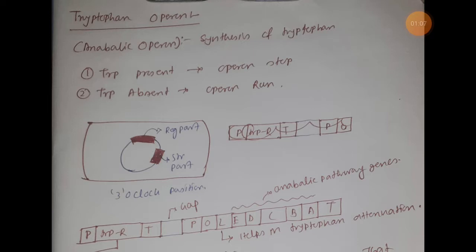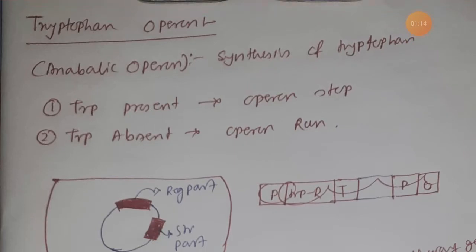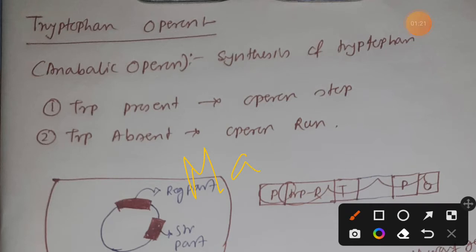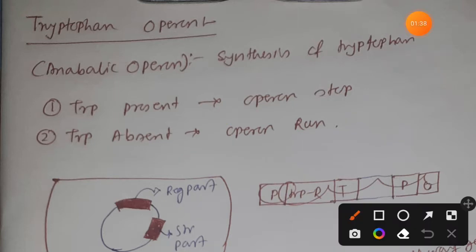In case of tryptophan operon, obviously tryptophan is synthesized. Now suppose when a particular item is already available — suppose you have Maggie which is already cooked. In that case do you want to cook it again? No. But when there is no readily cooked Maggie present in your home and you want to eat Maggie, then you have to simply cook it.